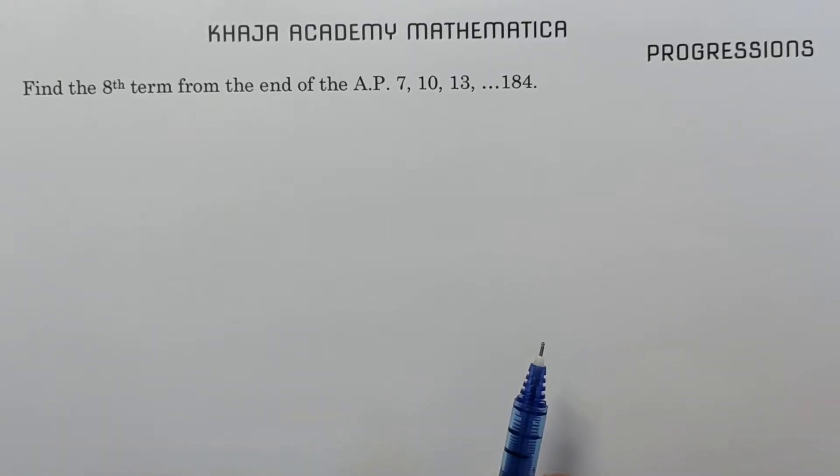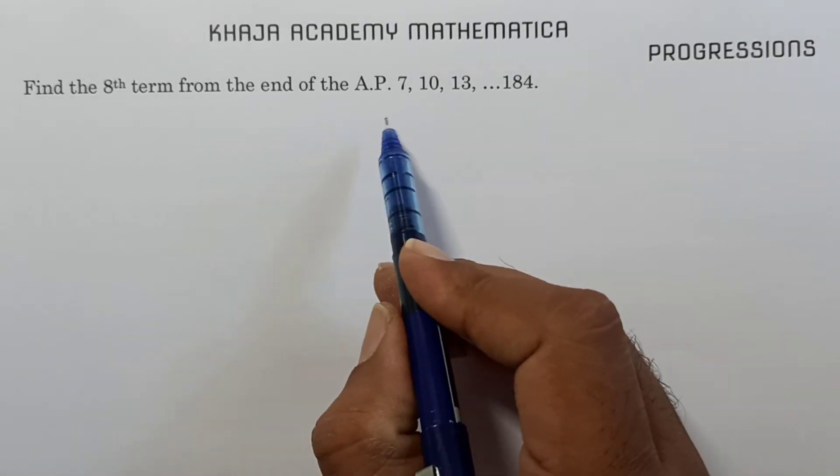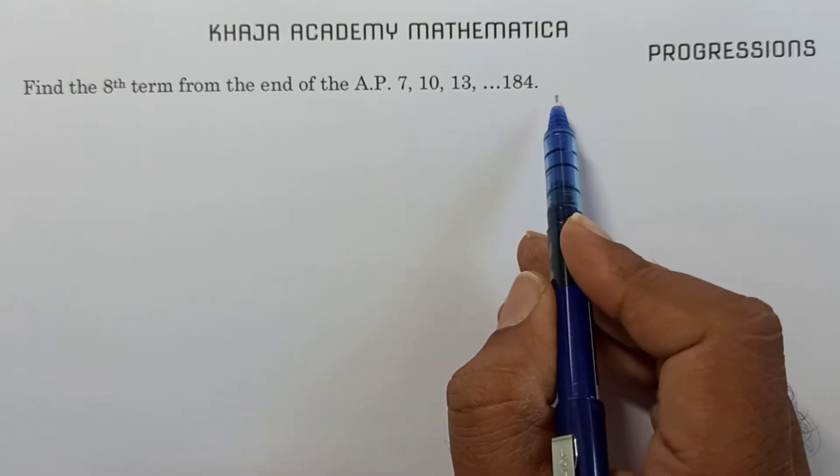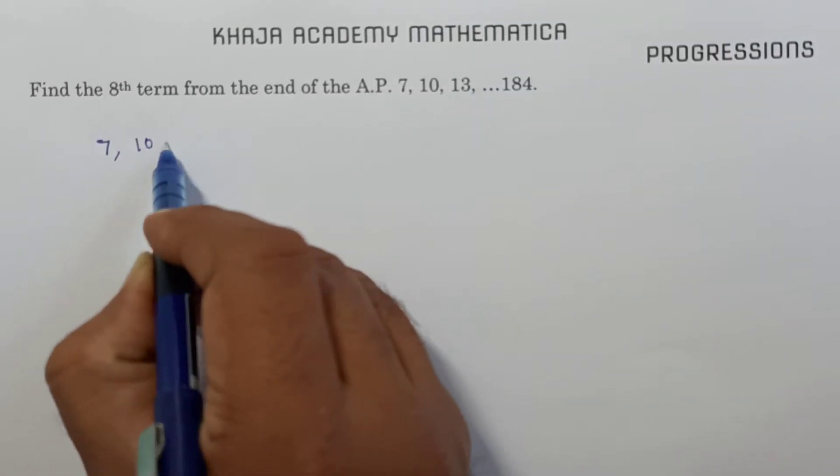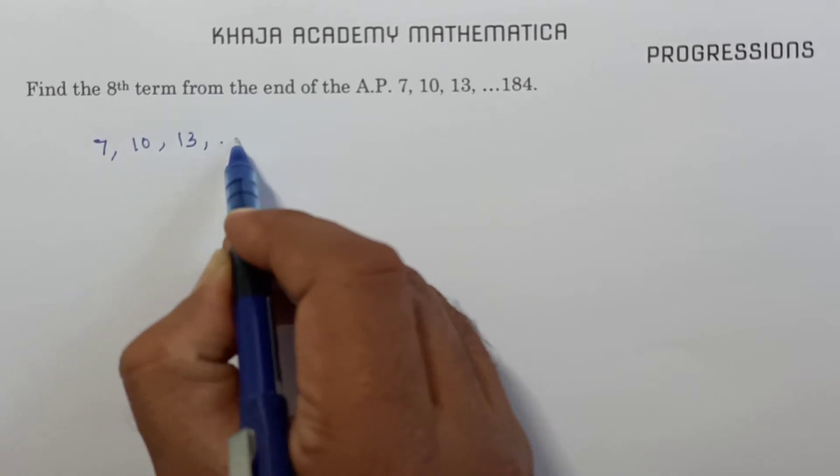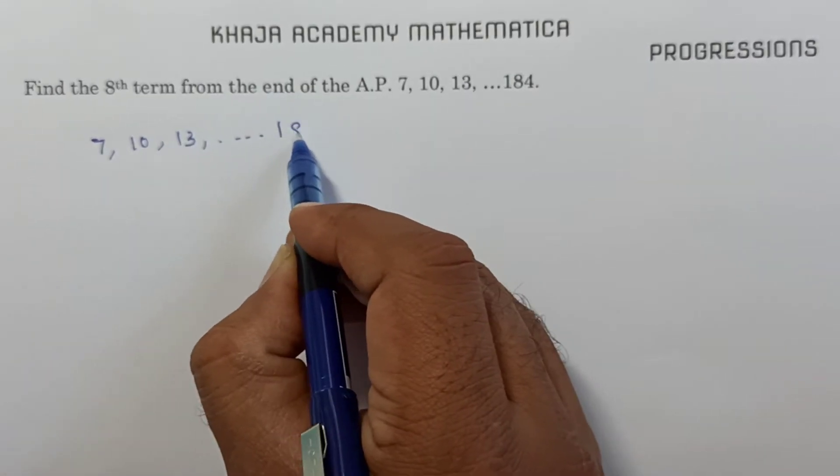Find the 8th term from the end of the A.P. 7, 10, 13, so on, 184. So if you see the series: 7, 10, 13, so on, 184.